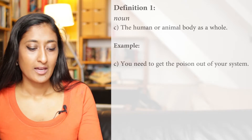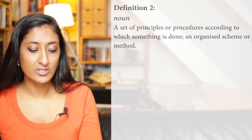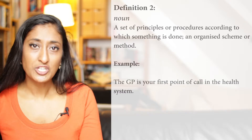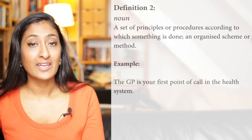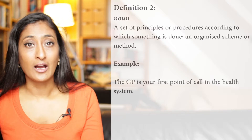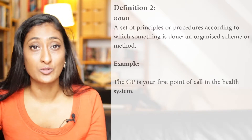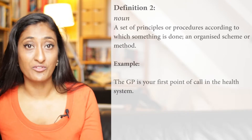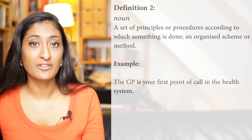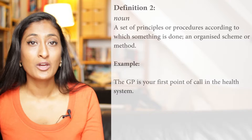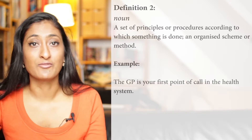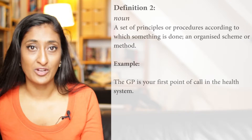Definition number two: a set of principles or procedures according to which something is done — an organised scheme or method. Here's an example sentence: the GP is your first point of call in the health system. In this case you're talking about an organisational structure where you talk to different health professionals. The GP is always the first person you go to, and if they can't fix it they refer you to other medical professionals in hospitals. This whole procedure is referred to as a system.